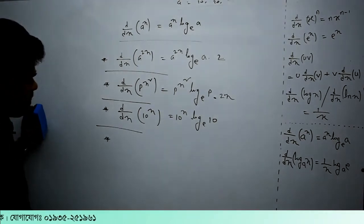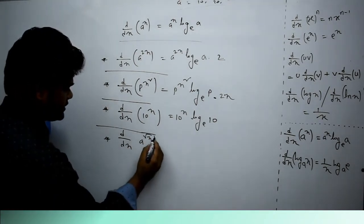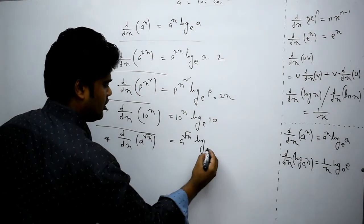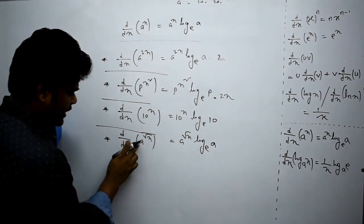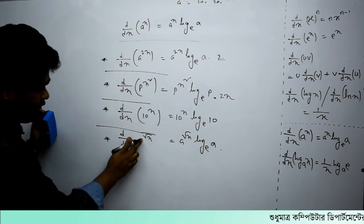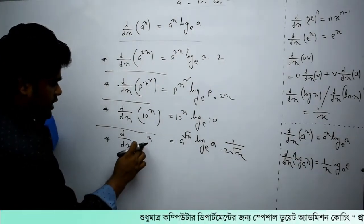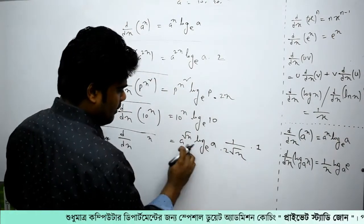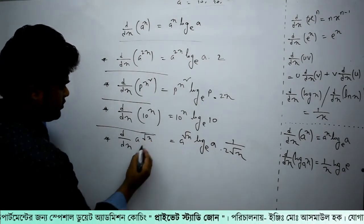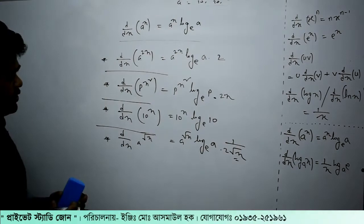d by dx of a to the power root of x — in demonstration, a to the power x, log e. For a to the root x, the result includes a to the power root x times log a times 1 by 2 root x.